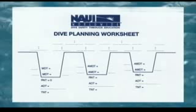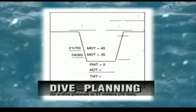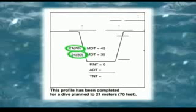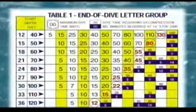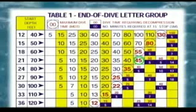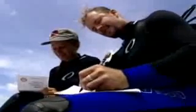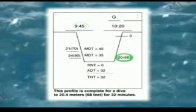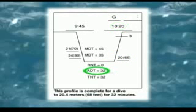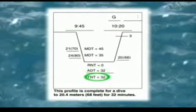This method of calculating your dive times is called the Profile Method. Write down your planned depth of 21 meters or 70 feet, and add 3 meters or 10 feet just in case you exceed your planned depth. Look at Table 1 and find the MDT for your planned depth, then add 3 meters or 10 feet to find the MDT for your contingency depth. After diving, record the information from your first dive: your start time, deepest depth, time surfaced, and your ADT — remembering to subtract the 3-minute precautionary stop from the elapsed time — then find your letter group designation.